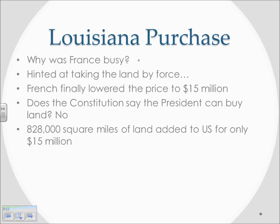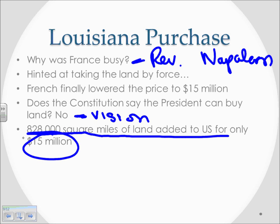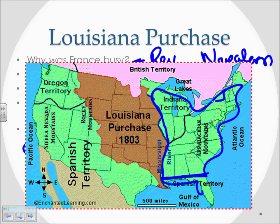At the time, France was busy with the Revolution and also the Napoleonic Wars, and war costs money. An easy way to get money is to sell land. Jefferson hinted at taking the Louisiana territory by force, but the French finally agreed to sell it for about $15 million. This caused Jefferson some internal conflict, because the Constitution does not say that the president can buy land — yet buying land went directly to his vision for America. This caused him to evolve from his strict constructionist view. Regardless, the U.S. acquired 828,000 square miles for only $15 million — roughly doubling the nation's territory, acquiring all the land to the west (Spain still owned Florida).